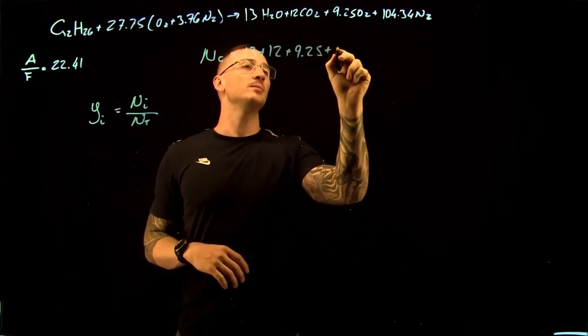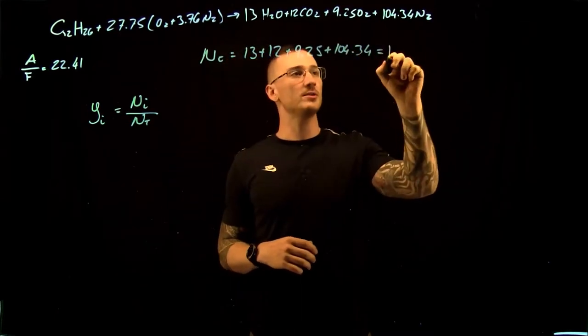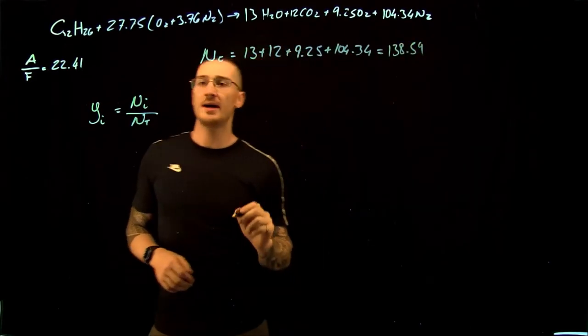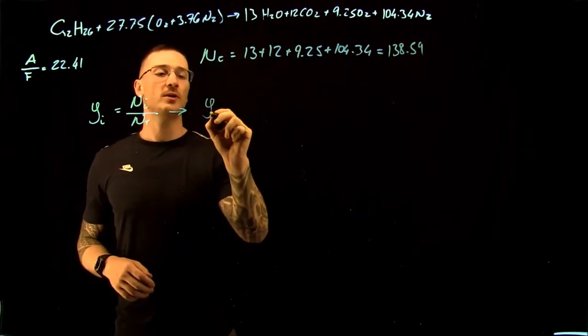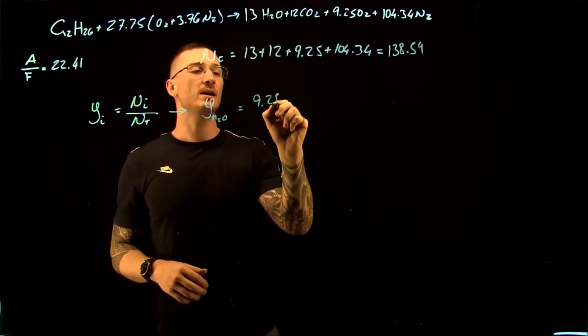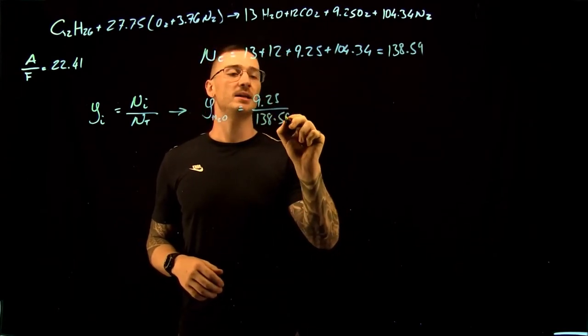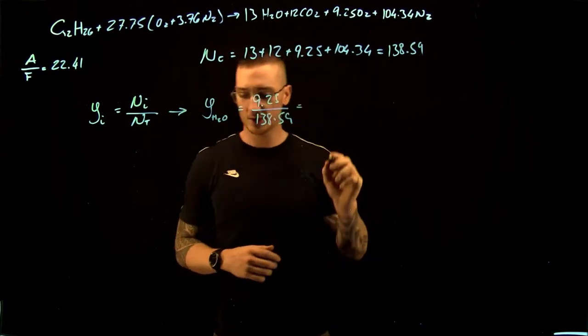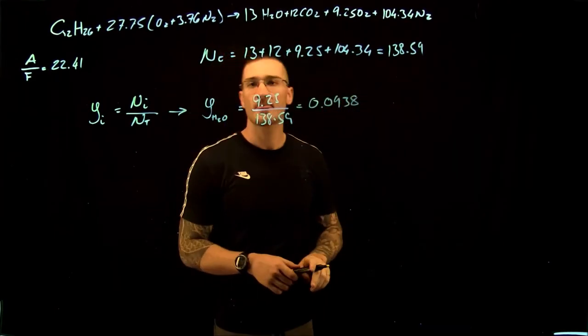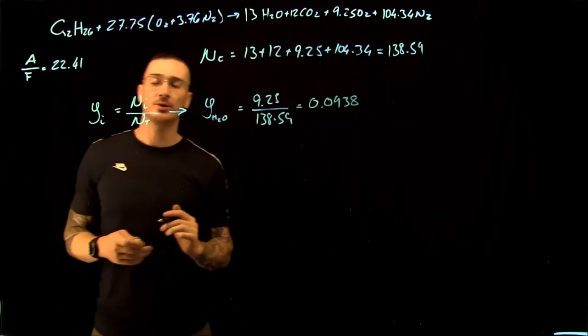We know that our mole fraction of H2O is going to be equal to 13 divided by 138.59, which gives us a mole fraction of 0.0938. We then assume that our ambient pressure is 101.3 kPa.